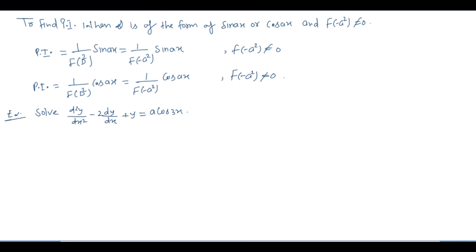D² की जगह minus a² put करना है, और f(-a²) की जो value आएगी वो 0 नहीं आएगी — 0 के बराबर नहीं होगी। इसे हम बेहतर तरीके से इस example से समझ सकते हैं।